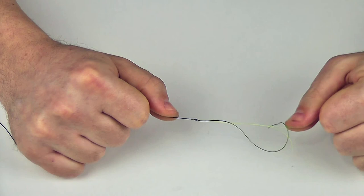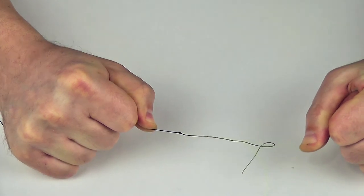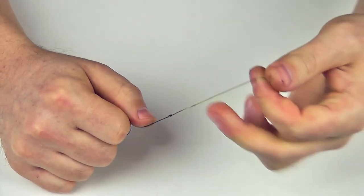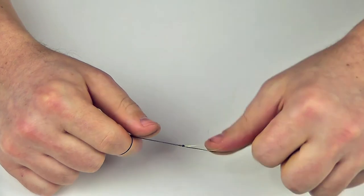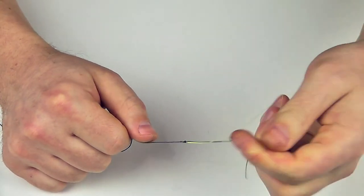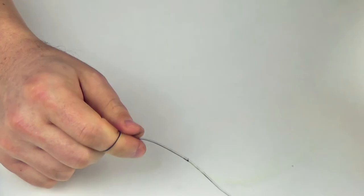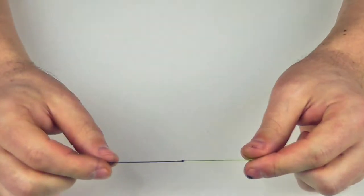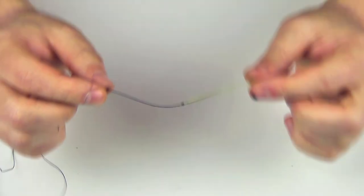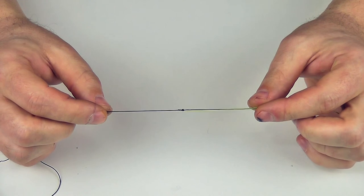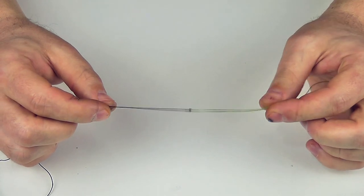And the last thing to do, pull the main line and the shock leader. It is important to tighten the shock leader itself. So we got a very compact, arrow-looking knot.